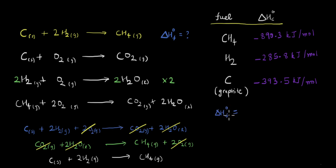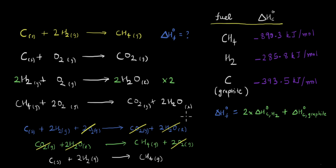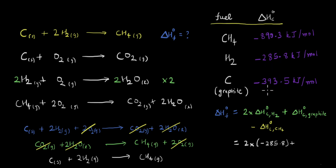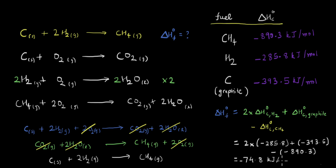By Hess's law, the enthalpy of formation equals the sum of the enthalpies of the individual steps. So the enthalpy of formation of methane equals 2 times the standard enthalpy of combustion of hydrogen, plus the standard enthalpy of combustion of graphite, minus the standard enthalpy of combustion of methane. Plugging in the three known values and keeping track of the negative signs, we get the enthalpy of formation of methane to be minus 74.8 kilojoules per mole.